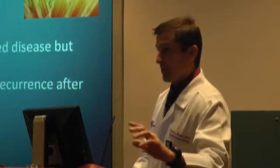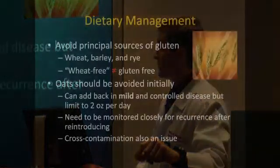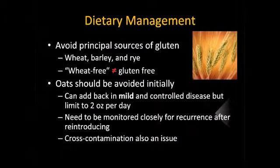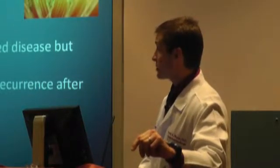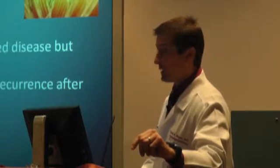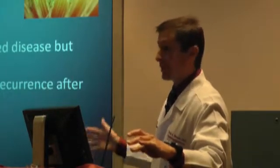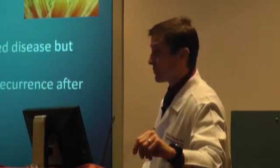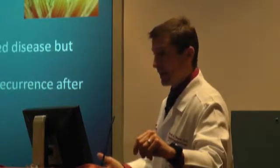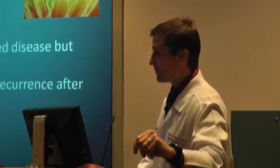The principal treatment is dietary management — you need to avoid all sources of gluten, mainly wheat, barley, and rye. If you see something labeled wheat-free, be careful, because that does not equal gluten-free — it could still have barley or rye, or be processed in a facility where wheat was processed. Oats should be avoided initially because they're close in family group to wheat products and often processed in the same plants. If you really want oats, I'll consider it only in people with mild, controlled disease, limited to two ounces per day, introduced carefully with close monitoring of antibodies and symptoms.